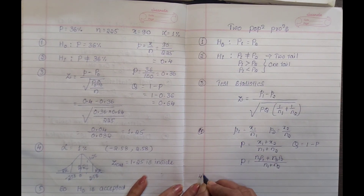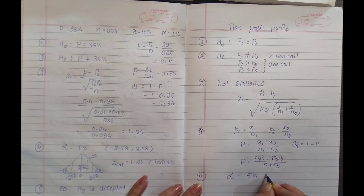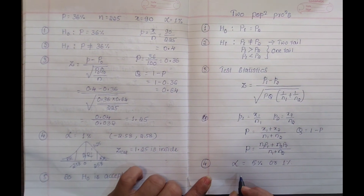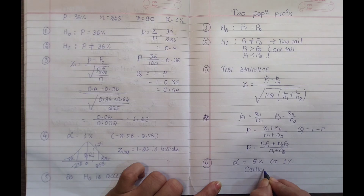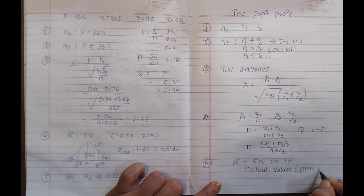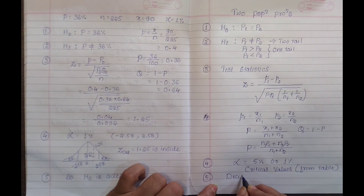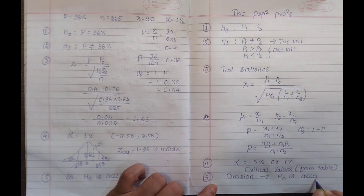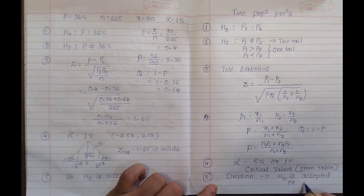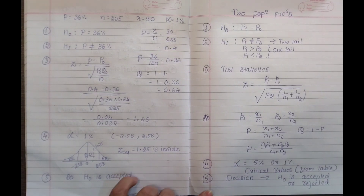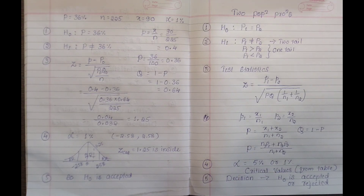The fourth step is alpha, the level of significance. Alpha equals either 5% or 1%. The critical values are taken from the statistical table. The fifth and last step is decision making — for every problem, we decide whether H0 is accepted or rejected. This is the complete procedure and all the steps are very clear.